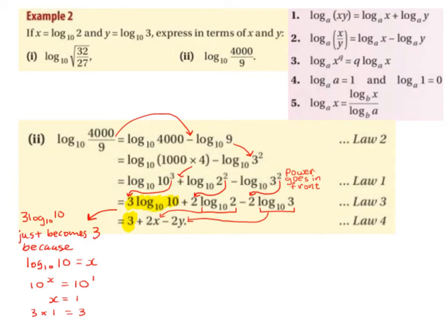Next, I'm going to break up 4000 and change it to 1000 times 4. So log base 10 of 4000 can be rewritten as log base 10 of (1000 × 4). We bring down the minus, and then log base 10 of 9 is rewritten as log base 10 of 3 squared, because we want our logs to eventually be in the form of log base 10 of 2 and log base 10 of 3.